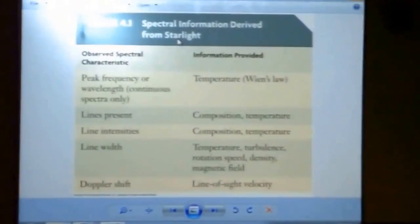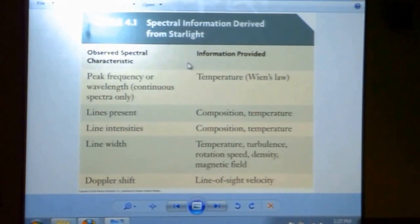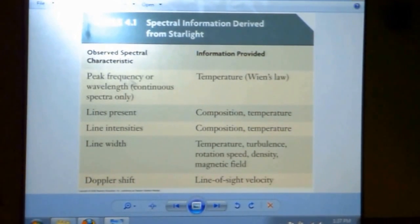So here's a table that summarizes everything. Basically, different things that you can observe and what you can learn. Let me just run through it real quick. So if we have a continuous spectrum, if it's thermal, the peak frequency tells you the temperature by Wien's Law. Also, the colors can be used to give you the temperature or the overall emission by Stefan's Law.